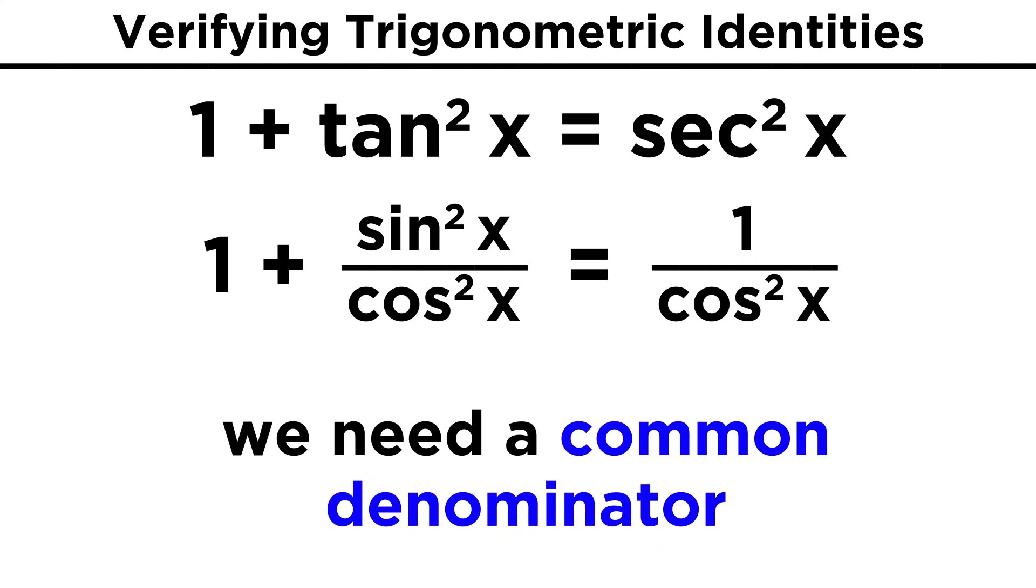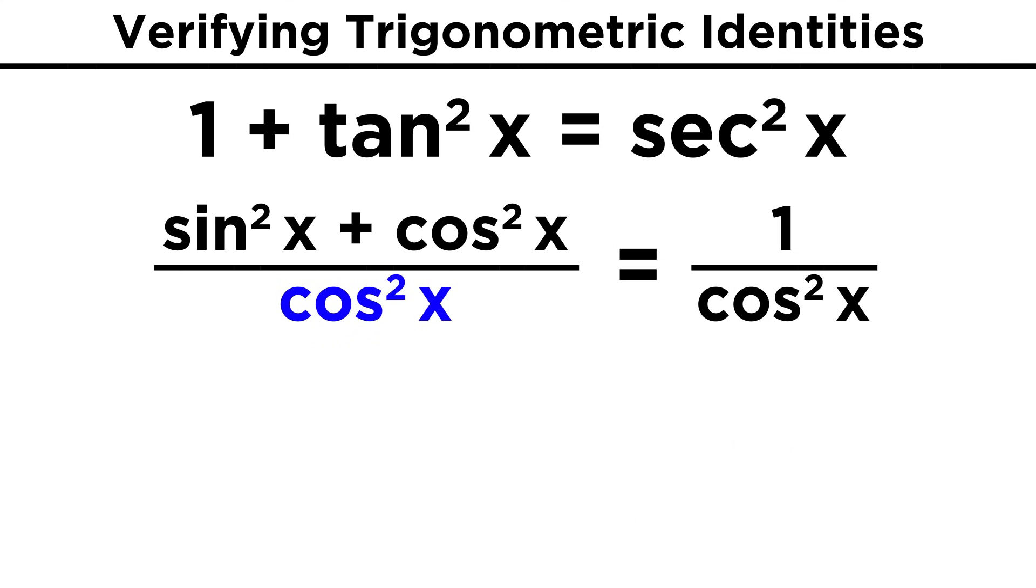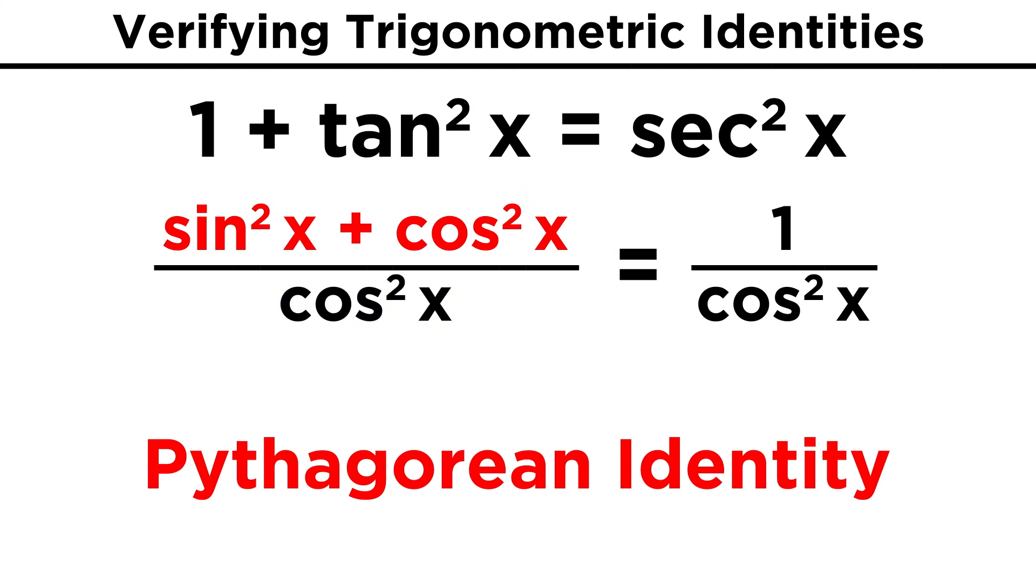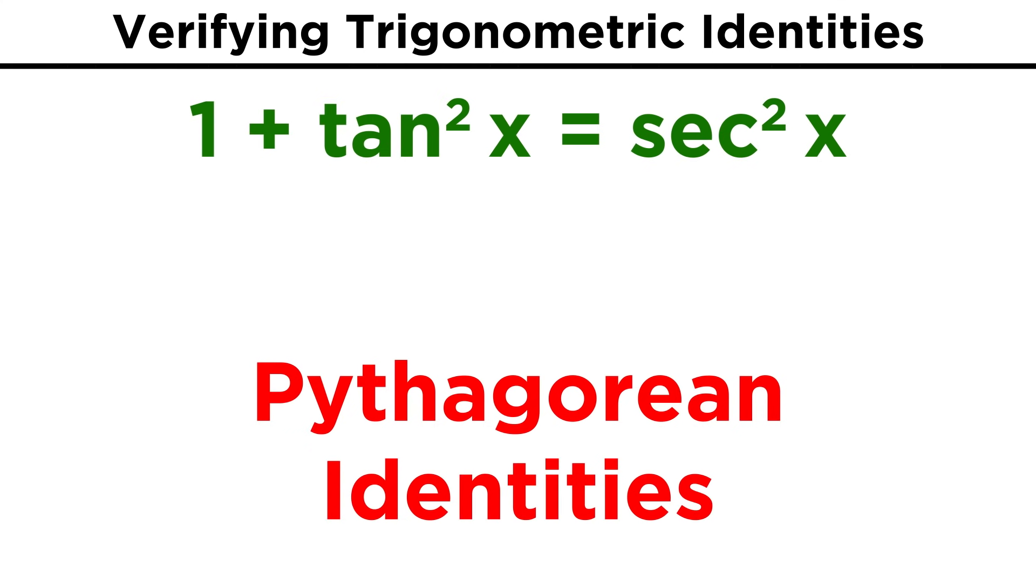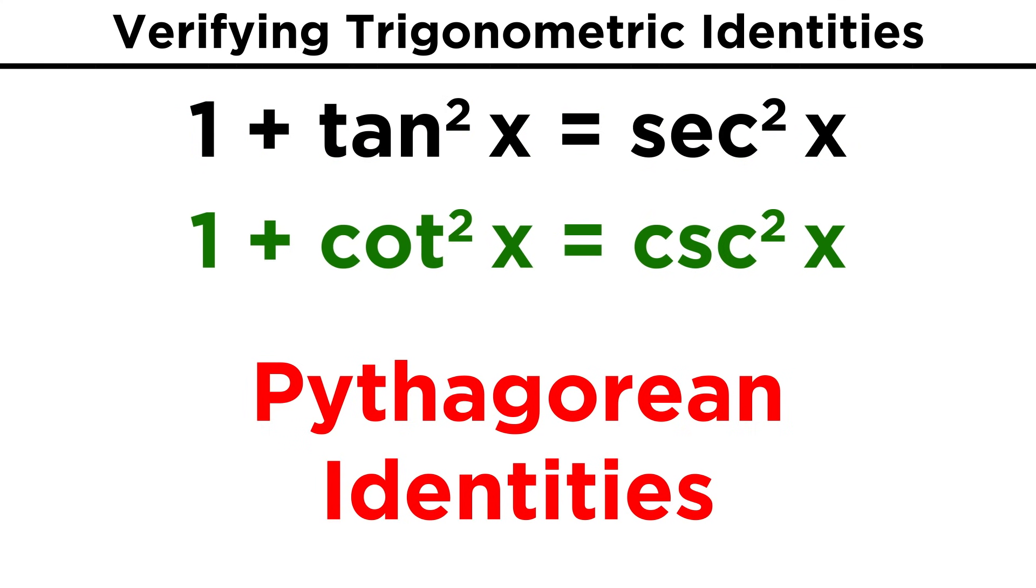Well to combine terms, you need a common denominator, so let's express one as cosine squared over cosine squared. Now we can add them together, and we get sine squared plus cosine squared over cosine squared. Well let's recall that sine squared plus cosine squared equals one, so there we have it. This relationship is actually a basic identity we can use for other problems, along with one plus cotangent squared equals cosecant squared.